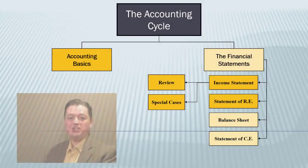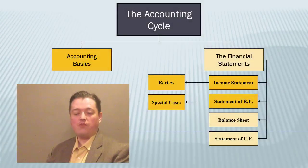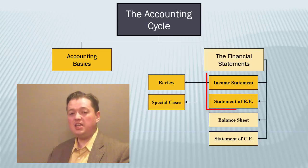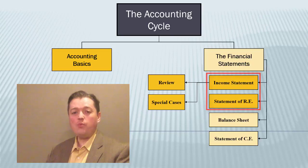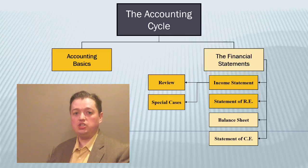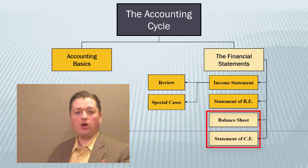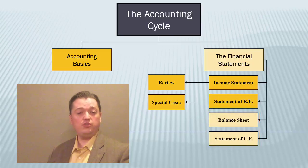Welcome back to our intermediate financial accounting class. Over our last few segments we've been talking about the first two financial statements, the income statement and the statement of retained earnings. Now we get to turn our attention to the next two financial statements, the balance sheet and the statement of cash flows, as part of our overall discussion or review of the accounting cycle.